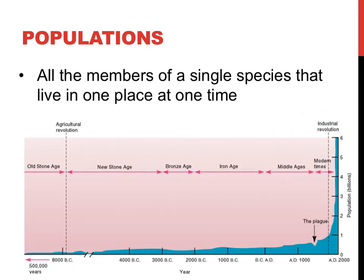A population is a group of organisms of the same species that live in a particular place at a particular time. Ecologists might study, as the graphic below shows, how a population changes in size over time. In addition, scientists might study how organisms are dispersed in an area or the care that they provide for their offspring.